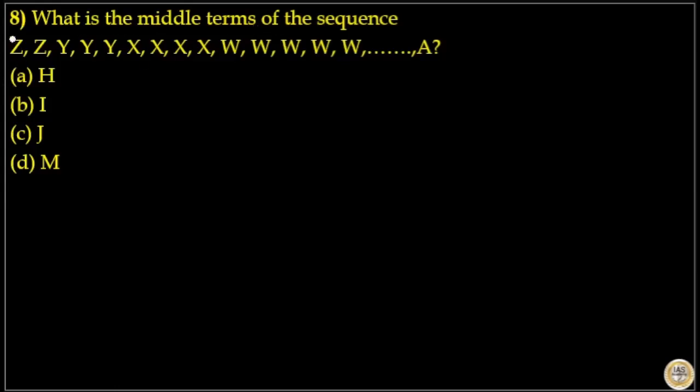What is the middle term of the sequence? Here you can see Z repeats 2 times, Y repeats 3 times, X repeats 4 times, and W repeats 5 times.